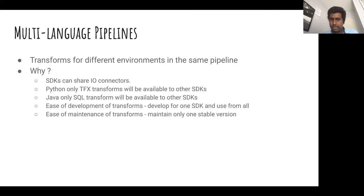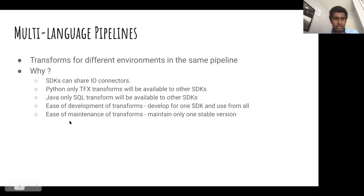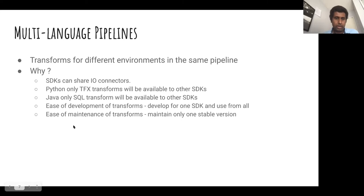If you look at Beam today, Java has been around the longest and has a lot of nice IO connectors. Python is newer and doesn't have all the features Java has yet. One nice thing with multi-language pipelines is that Python will be able to use some of the existing Java connectors. There are also connectors and transforms like TFX that are only available in Python, so Java will be able to use those. We also have support for a SQL transform that is developed in Java, and multi-language allows Python SDK — or in the future Go SDK — to use it.